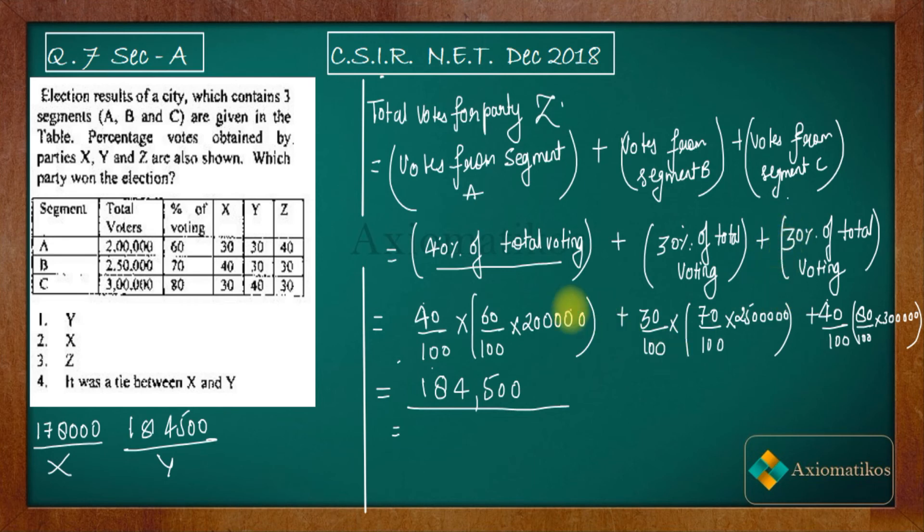So let me correct this one also. So this thing I have to change - this thing will be 30. So 40, 30, 40, 30. Okay, now let us calculate.